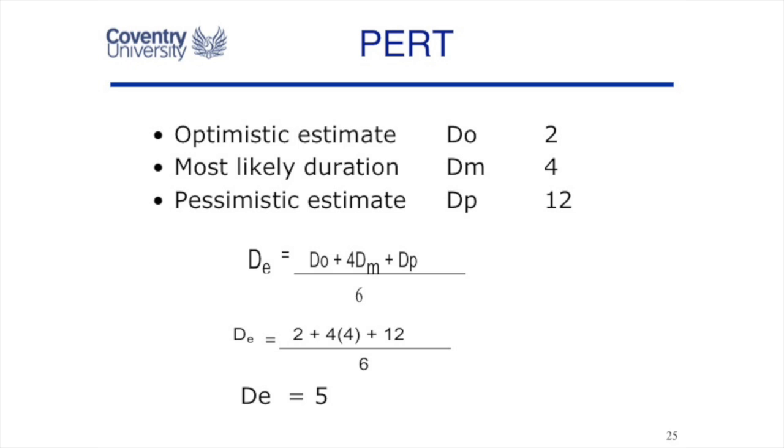So one of the optimistics is two days, four times four days, 16 days, plus 12 days, the pessimistic, divide it by six, and we'll say it's a five-day estimate of duration for this task.